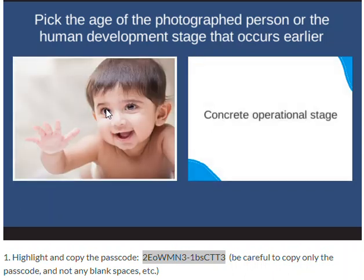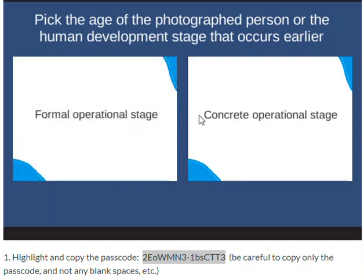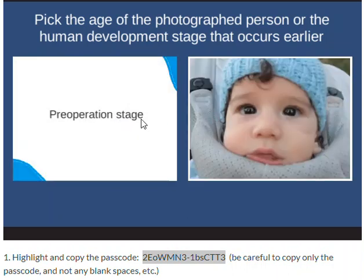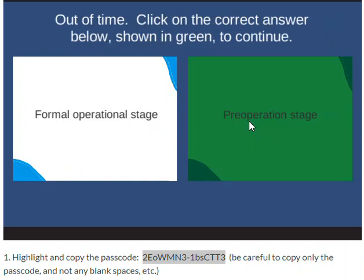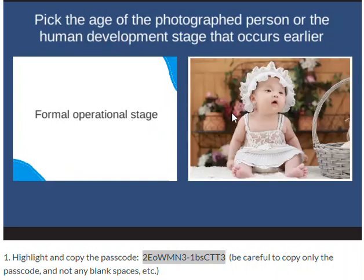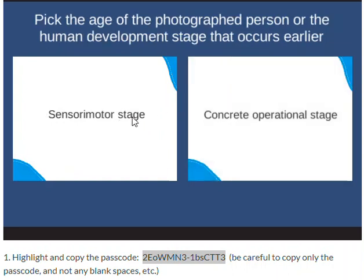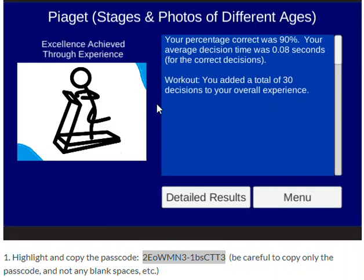You're just going through it and clicking on whichever occurs earlier. The idea is that this helps you become more familiar with the stages of Piaget's Cognitive Theory and also gives you a sense of what people look like at those stages. This task was completed with 90% accuracy, which met the required threshold.